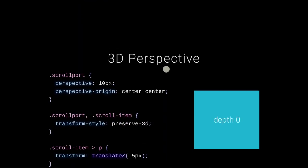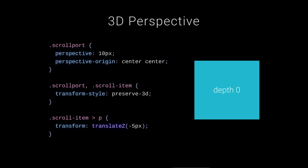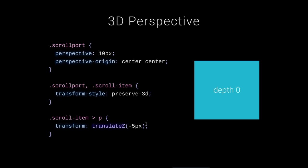You can also add 3D perspective — look at how the title moves at a different rate than the code samples, a gentle parallax effect. On the scroll port, give it a perspective value and set perspective-origin: center center. Then on both the scroll port and scroll items, set transform-style: preserve-3d — that's now required per the spec. The cool part: target anything you want and translate it along the Z axis, literally changing its depth in space.